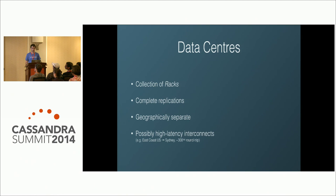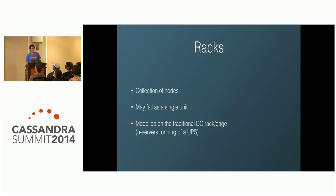A data center in Cassandra is basically a collection of racks. Data centers hold complete replications of your data, and Cassandra understands they may be geographically separate with high-latency links — for example, East Coast US to Sydney is approximately 300 milliseconds round-trip. You don't want your application connecting to nodes on the wrong continent. A rack is a collection of individual Cassandra nodes, and Cassandra understands a rack might fail as a single unit, so it ensures enough replicas exist within a DC to handle rack failure.